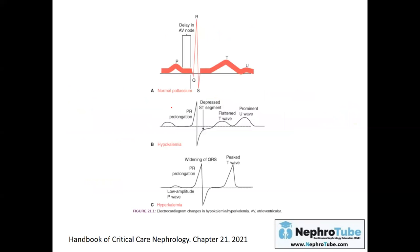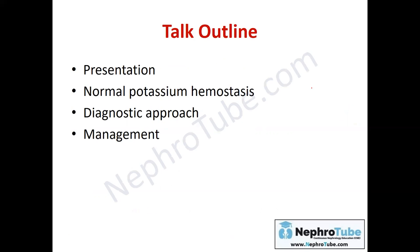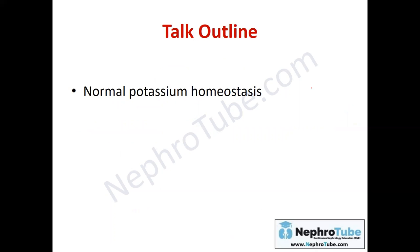This is how the ECG of a hypokalemia patient will appear. You may find prolongation of the PR interval, a depressed ST segment, flattening of the T wave, and if the patient has a U wave, it may be prominent in these cases.